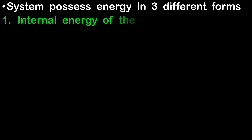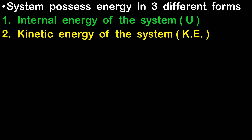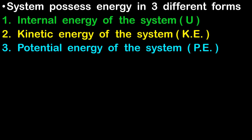A system possesses energy in three different forms. If a system has some amount of energy, then that energy will be present in any of these three forms. The first one is internal energy, the second is kinetic energy, and the third is potential energy. For example, if the system has 10 kilojoules of energy, then 2 kilojoules may be internal energy, 2 kilojoules kinetic energy, and the remaining 6 kilojoules potential energy.